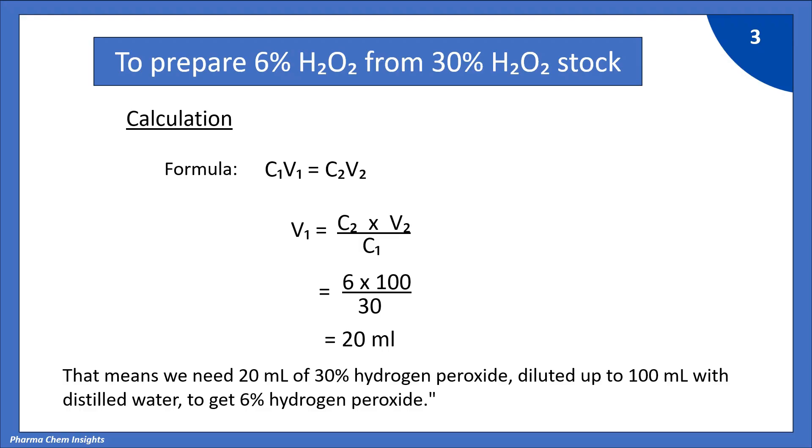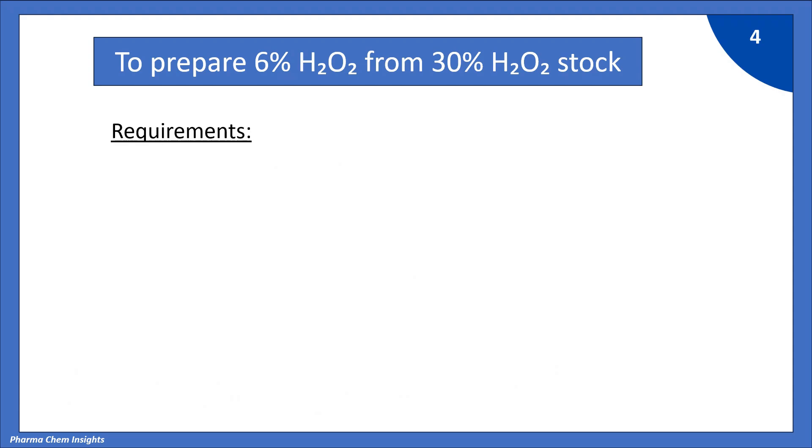That means we need 20 ml of 30% hydrogen peroxide diluted up to 100 ml with distilled water to get 6% hydrogen peroxide solution. Now, let's see the requirements to prepare 6% H2O2.